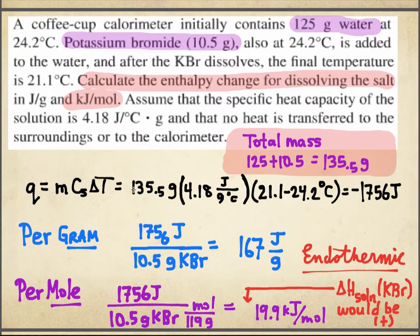The total mass is 125 grams of water plus 10.5 grams of salt, and the total mass that's changing in temperature. They both started at room temperature. That's convenient, because if it didn't, it would be a huge hassle. 4.18 is the assumed, presumed, probably a good assumption, because most of it's water anyway. Specific heat capacity, and the temperature change from 21 to 24.